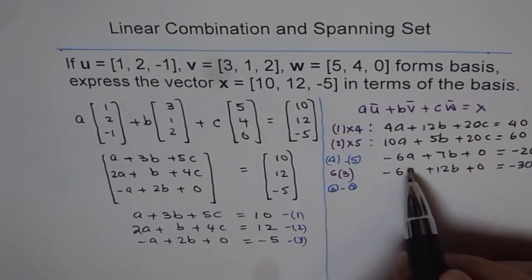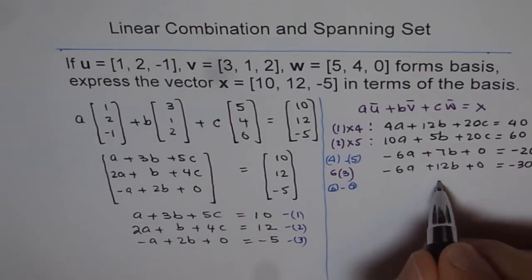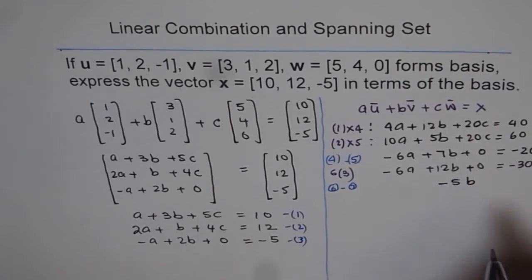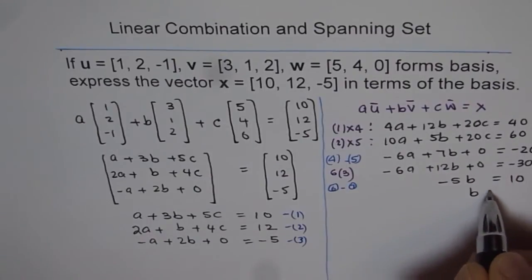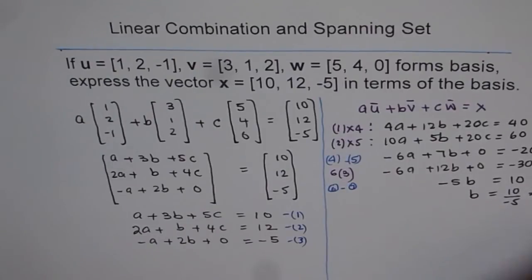So this minus this, we eliminate A, and here we get minus 5B equals to 10. Or B is equal to 10 divided by minus 5, and that gives us minus 2.